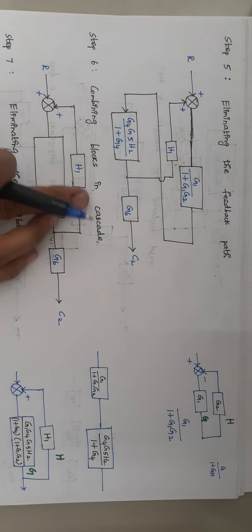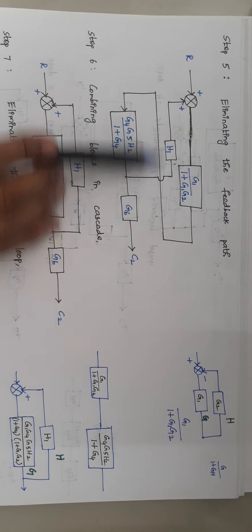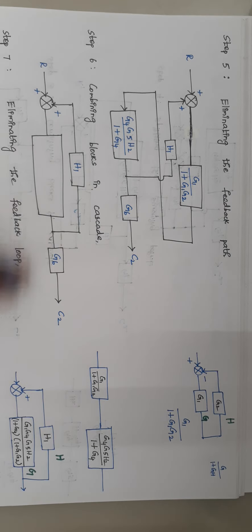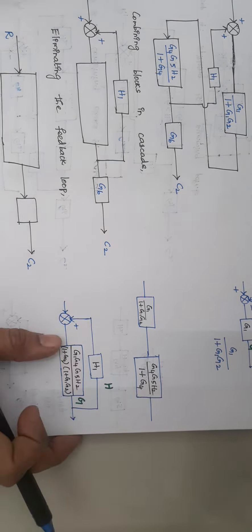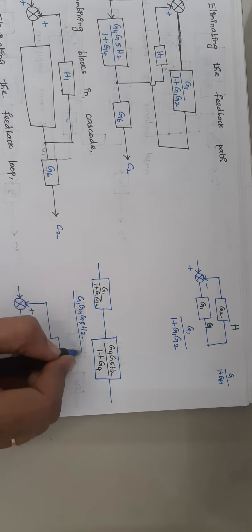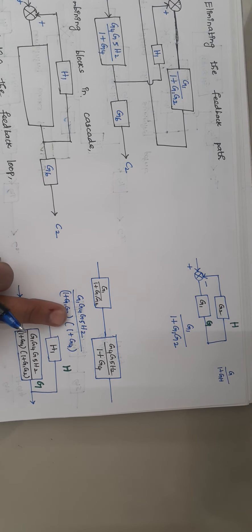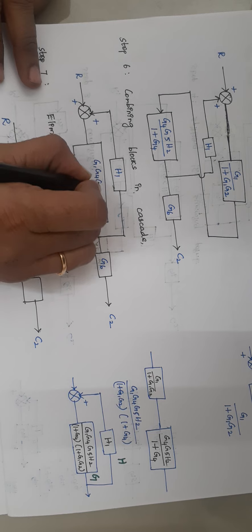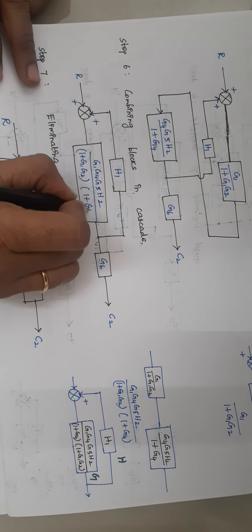The next step is combining the blocks in cascade. These two blocks are in series connection — the output of one block is given as input to the other. To combine blocks in cascade, just multiply them. When you multiply, you get G1G4G5H2 divided by 1 plus G1G2, multiplied by 1 plus G4.